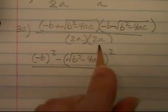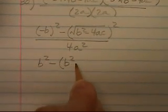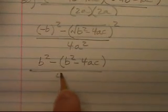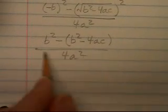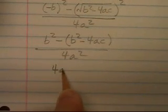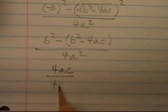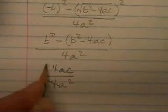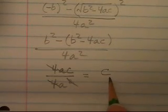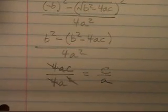So this will be minus B squared minus the square root of B squared minus 4AC, squared, all over 4A squared. That becomes minus the quantity B squared minus 4AC, all over 4A squared. If we distribute that minus sign, the B squareds cancel, giving us 4AC over 4A squared. The fours cancel and one factor of A cancels, so the product of the roots is C over A.